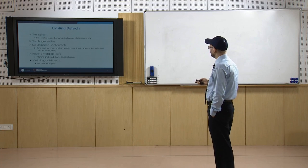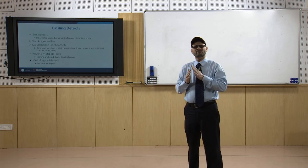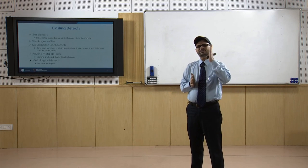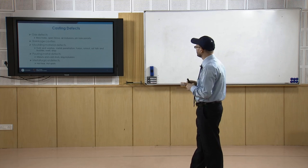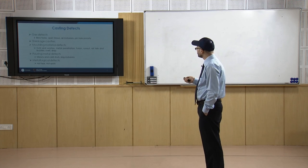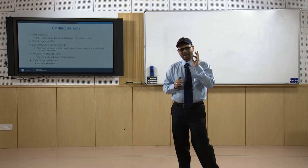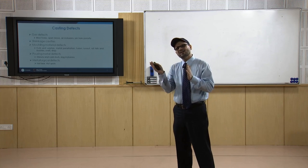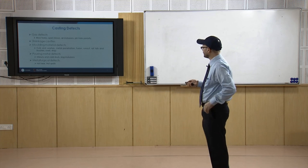Run out is the defect in which the molten metal comes out of the mould because of faulty mould making. For that, you have to ensure a proper mould making procedure so that molten metal does not come out at any point.